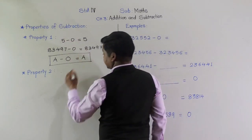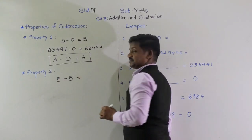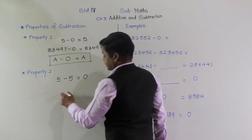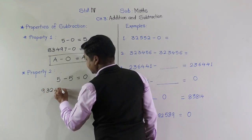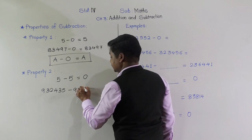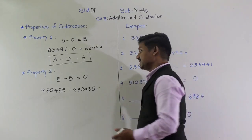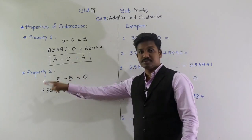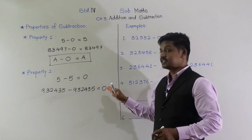We subtract 0 from a number. Now suppose from 5, if we subtract the same number 5, what will be the answer? 5 minus 5 equals 0. Similarly, if there is a 6-digit number like 9,32,435 and we subtract the same number 9,32,435 from it, then the answer is 0. If we subtract a number itself from the given number, the answer is 0.